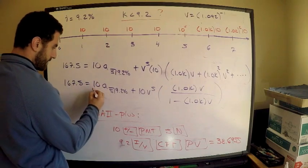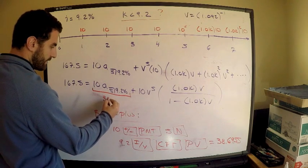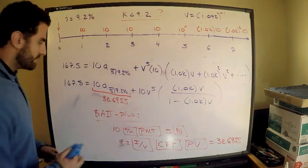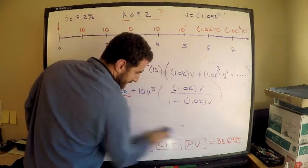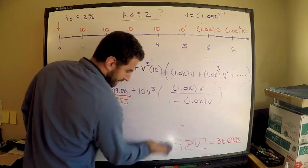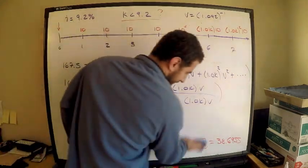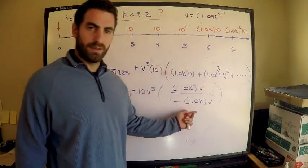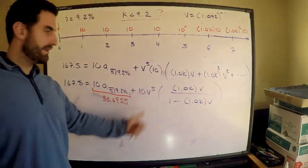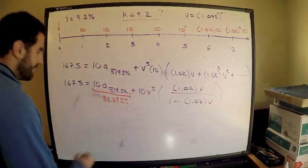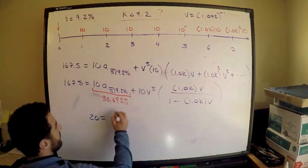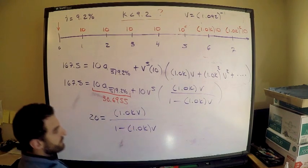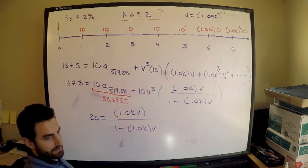This quantity is 38.6955. Now we just do some algebra. This is easy at this point. I'm going to subtract this and divide by 10V to the fifth. What I get is 20 equals 1.0KV divided by 1 minus 1.0KV. You should not have trouble solving an equation like this. This is intermediate algebra.